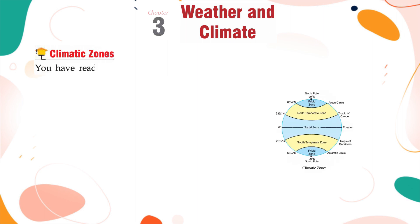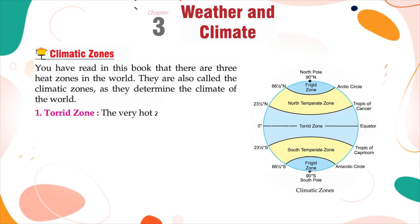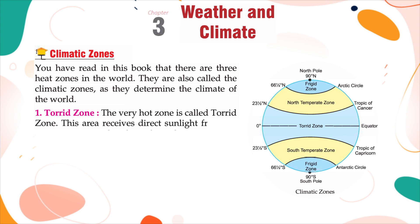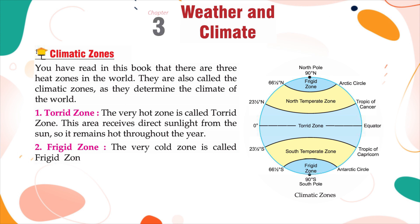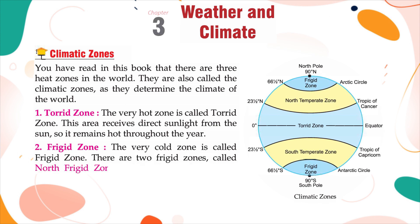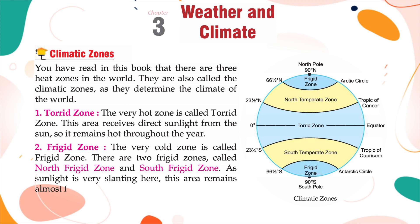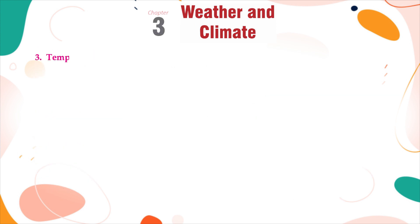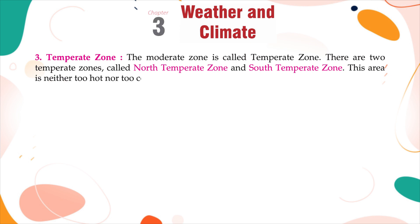Climatic zones. There are three heat zones of the world, also called climatic zones. The Torrid Zone is the very hot zone — it receives direct sunlight and remains hot throughout the year. The Frigid Zone is the very cold zone; there are two frigid zones — the north frigid zone and the south frigid zone — where sunlight is very slanting, so the area remains almost frozen throughout the year. The Temperate Zone is the moderate zone, with a north temperate zone and a south temperate zone — this area is neither too hot nor too cold, as the sunlight is slightly slanting.